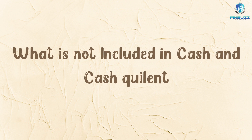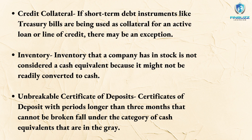There are some instances where short-term and current assets do not fall within the category of cash and cash equivalents. The first exclusion is credit collaterals — if short-term debt investments like treasury bills are being used as collateral for an active loan or line of credit, there may be an exemption. T-bills with restrictions must be submitted separately; the ability to convert any securities designated as cash and cash equivalents cannot be restricted. The next exclusion is inventory — inventory that a company has in stock is not considered a cash equivalent because it might not be readily converted to cash.